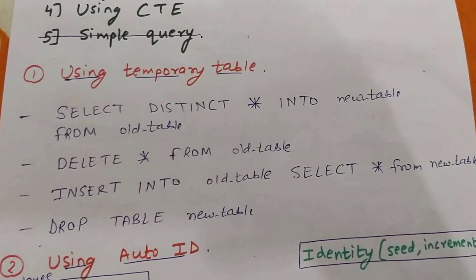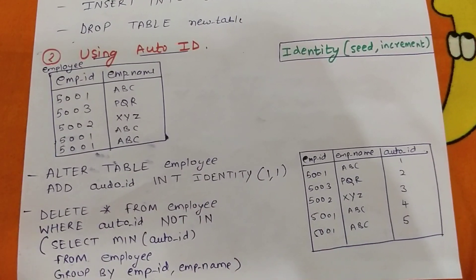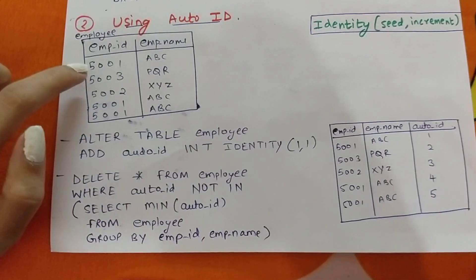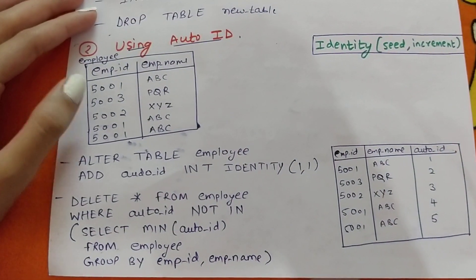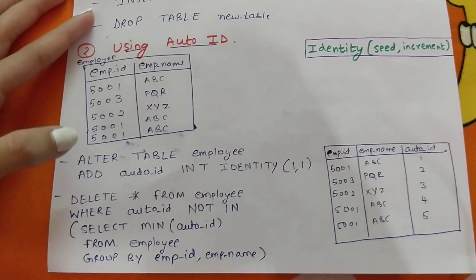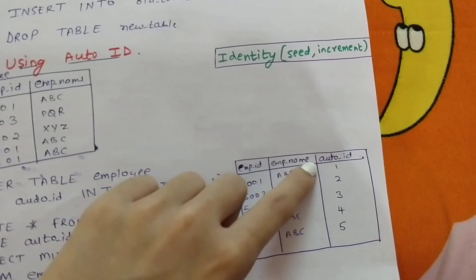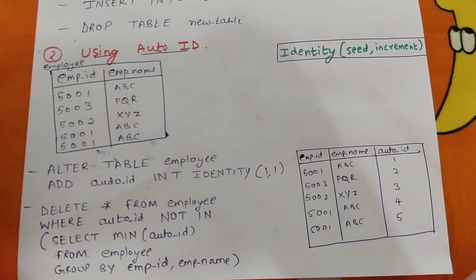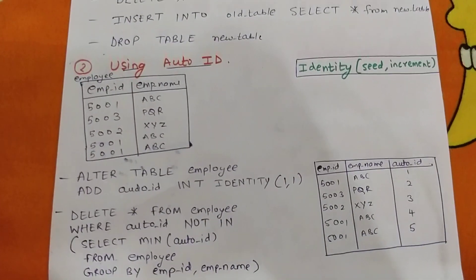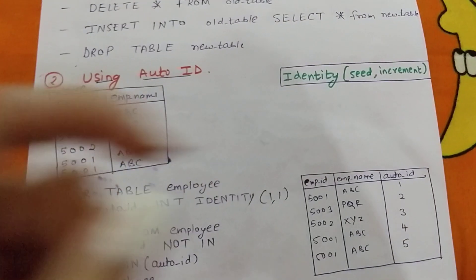The second way is by using auto ID. We have a table 'employee' which has employee_id and employee_name. It has some duplicate items — for example, 5001 is repeated three times. What we're going to do is add an auto ID to this table. Auto ID is like 1, 2, 3, 4, 5 — because the employee IDs are like 5001, 5002, 5003, and we want each row to have one unique identifier.